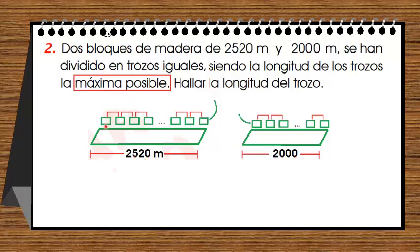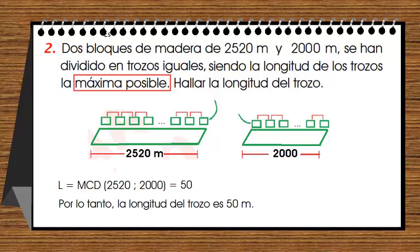Sacamos el máximo común divisor de dos mil quinientos veinte y dos mil, que es la longitud de las pequeñas maderitas. El máximo común divisor es cincuenta. Por lo tanto, la longitud del trozo es de cincuenta metros.